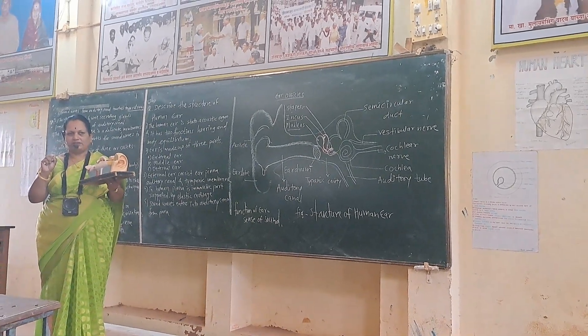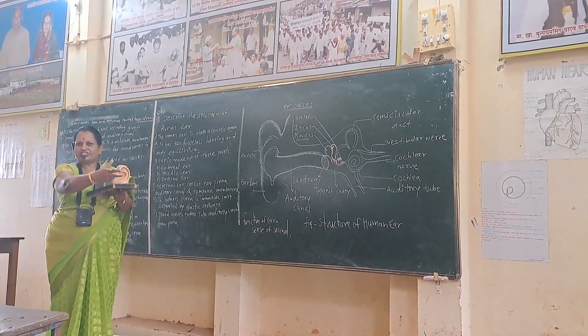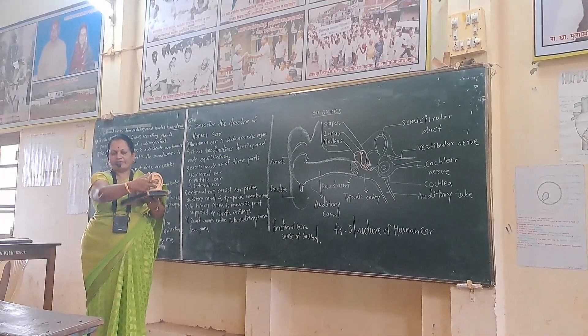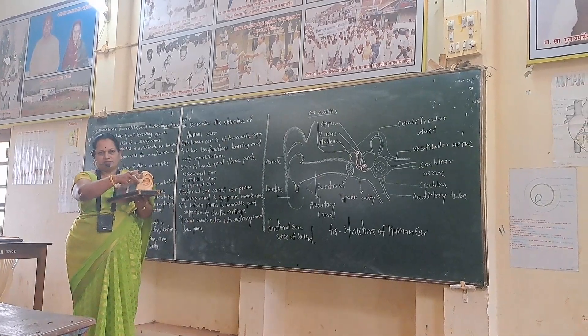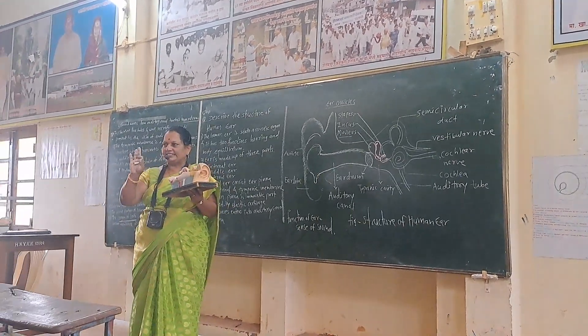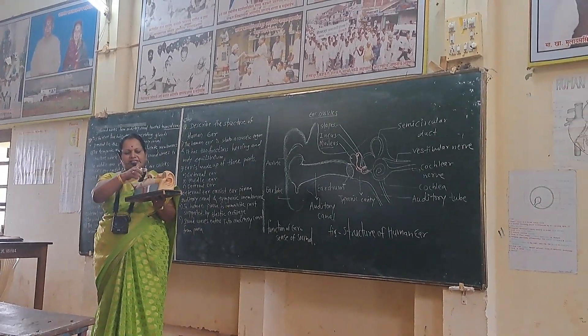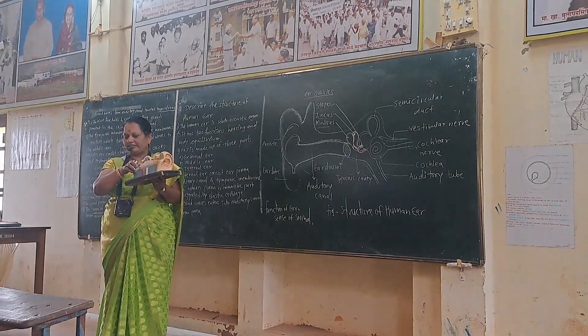The ear is the acoustic organ in the body which receives sound waves. The human ear consists of three regions: external ear, middle ear, and internal ear.